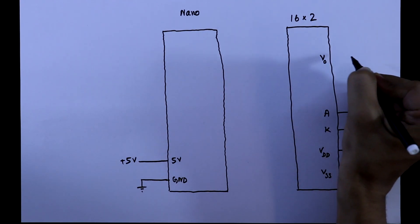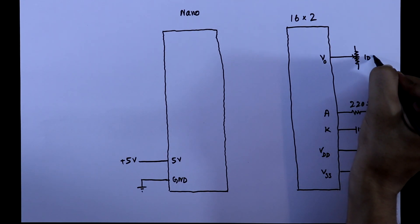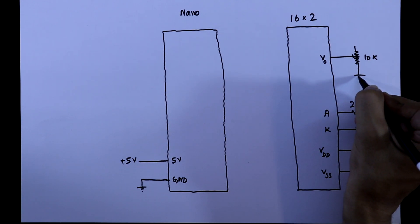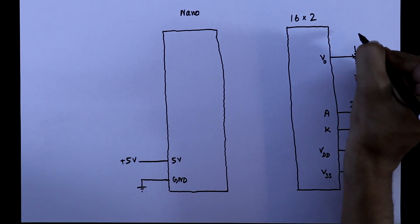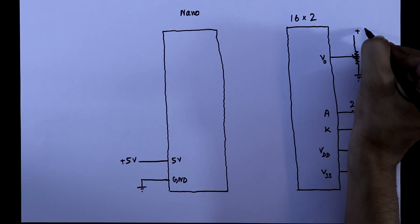V0 of the display will be connected to the middle pin of a potentiometer. The value is 10 kilo ohms. One end of the potentiometer will be connected to the ground and other end to the plus 5V.